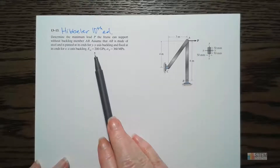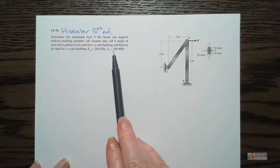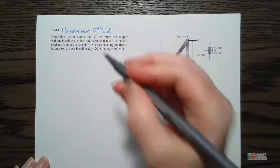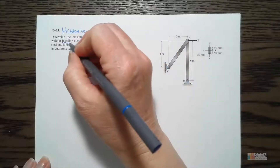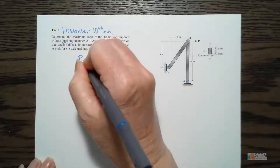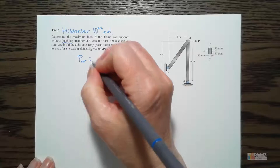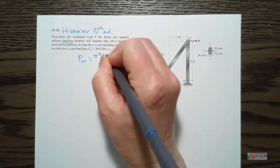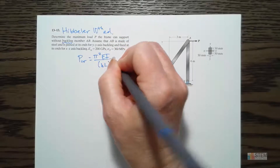It also gives us the E-value for steel and the yield stress for this steel material. So let's figure out what equation we need. When you think of buckling, the equation that pops into everybody's mind is Euler's formula - the PCR equation. PCR is going to be pi squared times EI over KL squared.